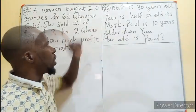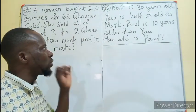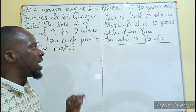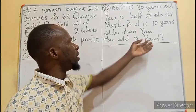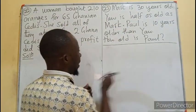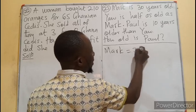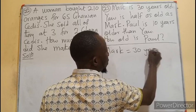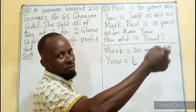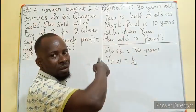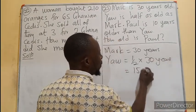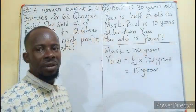Question 23: Mark is 30 years old. Yaw is half as old as Mark. Paul is 10 years older than Yaw. How old is Paul? Mark is 30 years. Yaw is half the age of Mark, so half of 30 gives us 15 years — meaning Yaw is 15 years old.